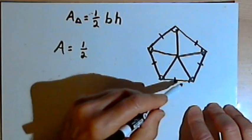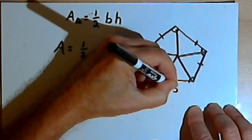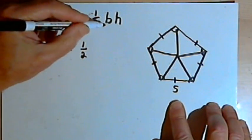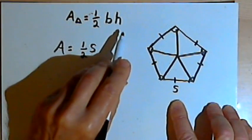instead of saying base, when we have a polygon, we talk about the length of a side. So instead of a B for base, I'll have an S for side. We also don't use the word height.